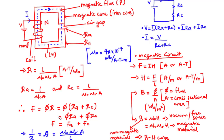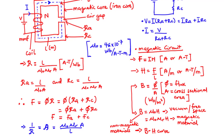The inverse of the reluctance is called the permeance, which equals μ₀ × μᵣ × A divided by L. Permeance is defined as the measure of the ability of a material to permit the setting up of magnetic flux.